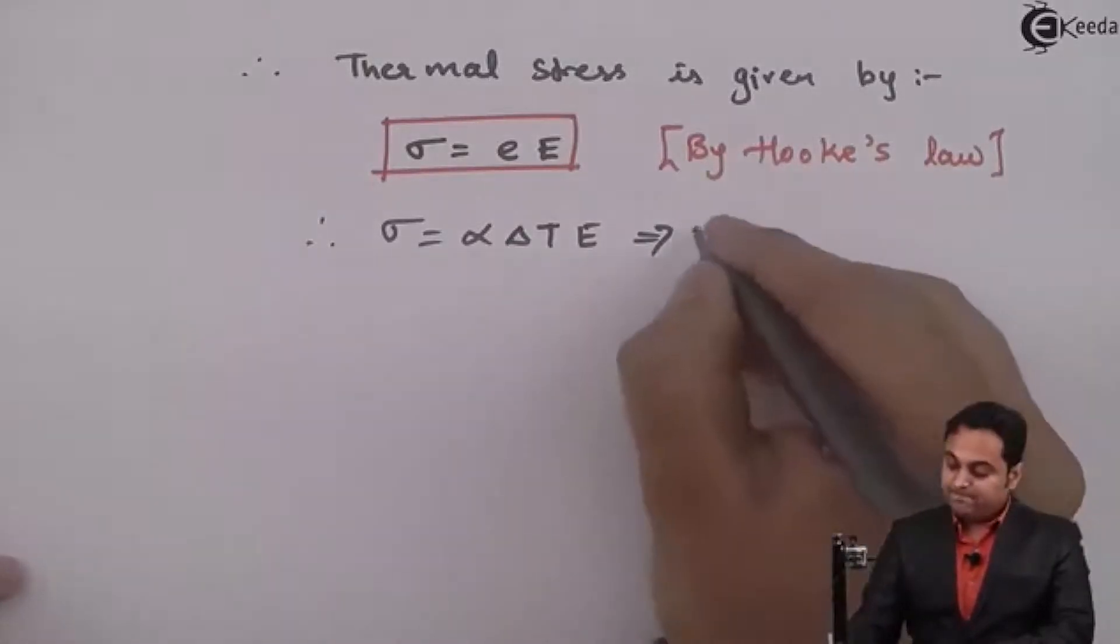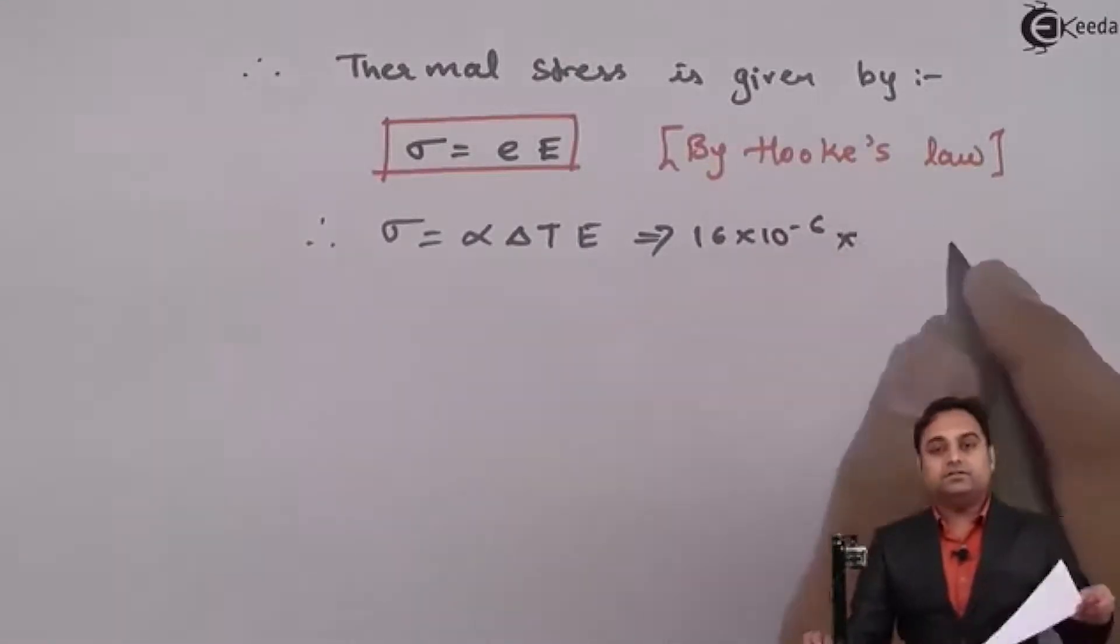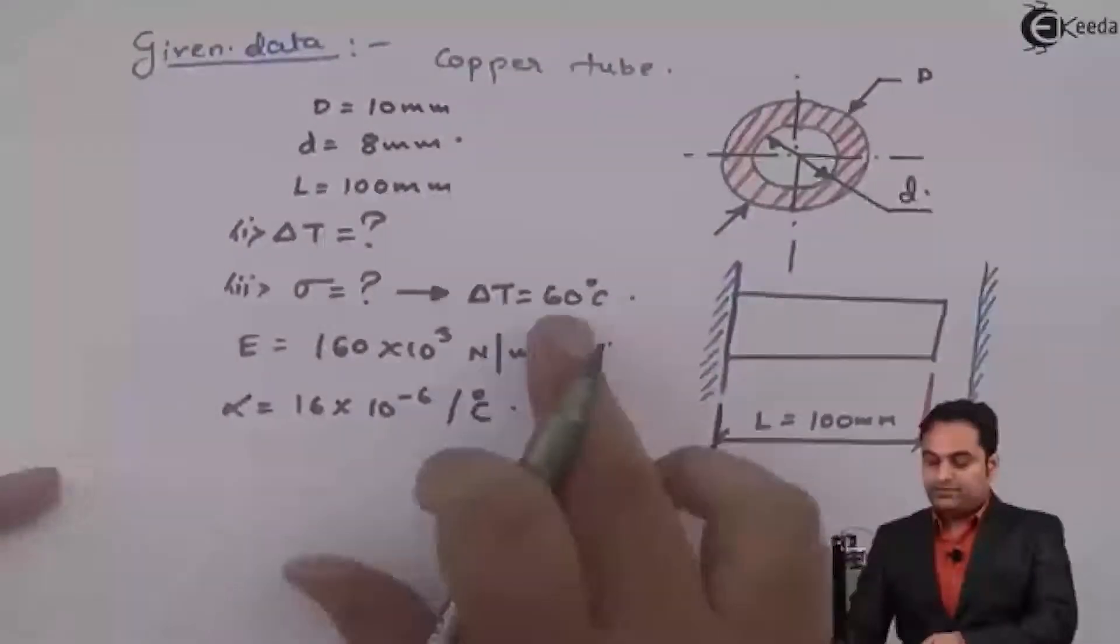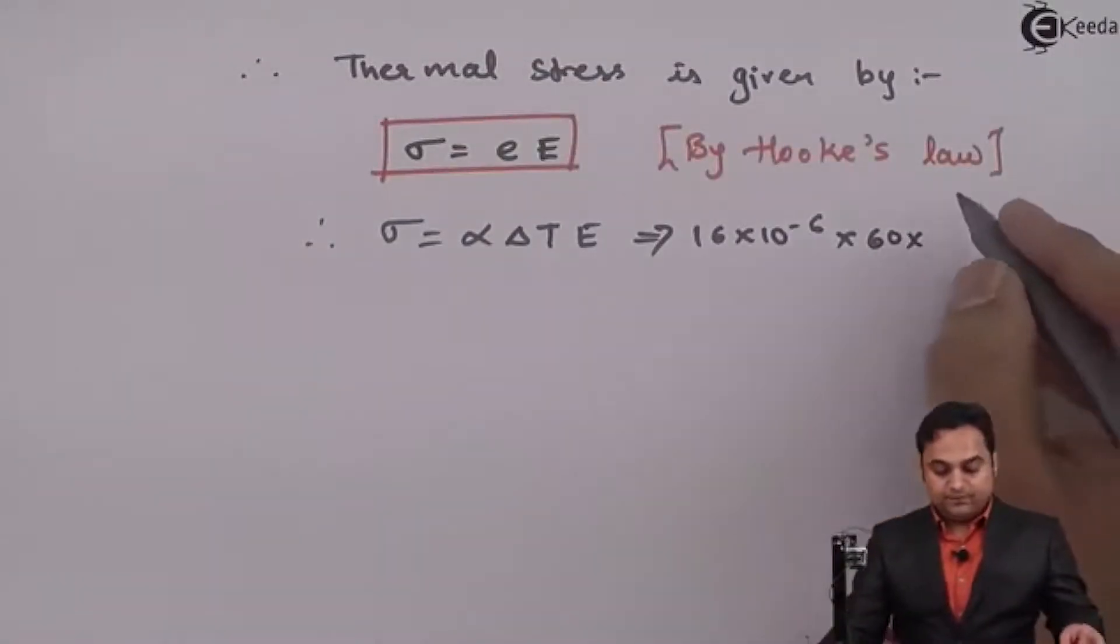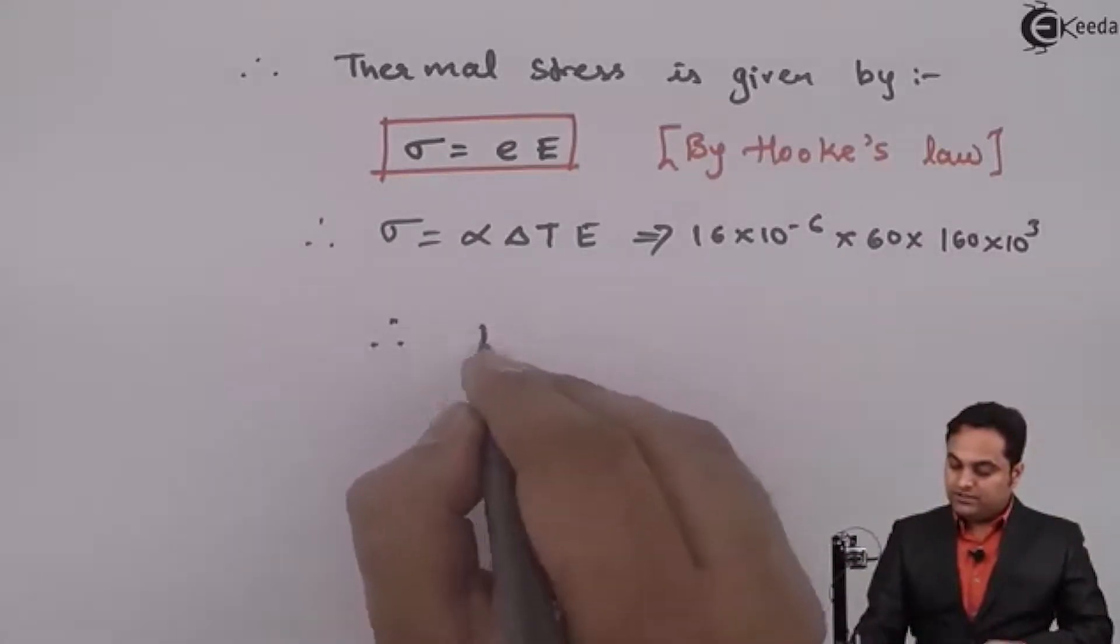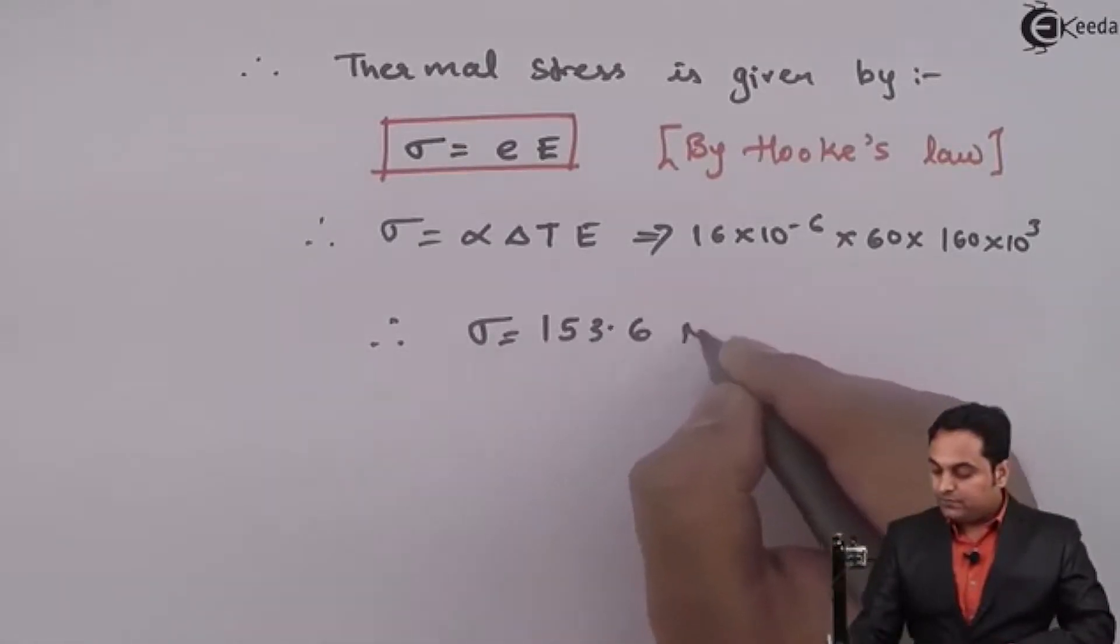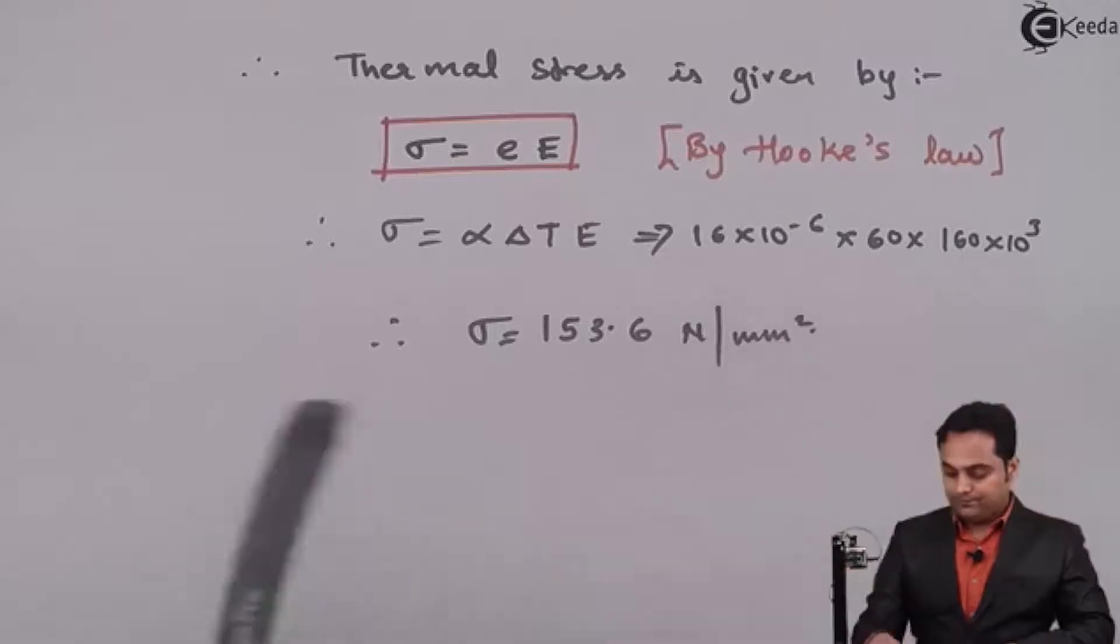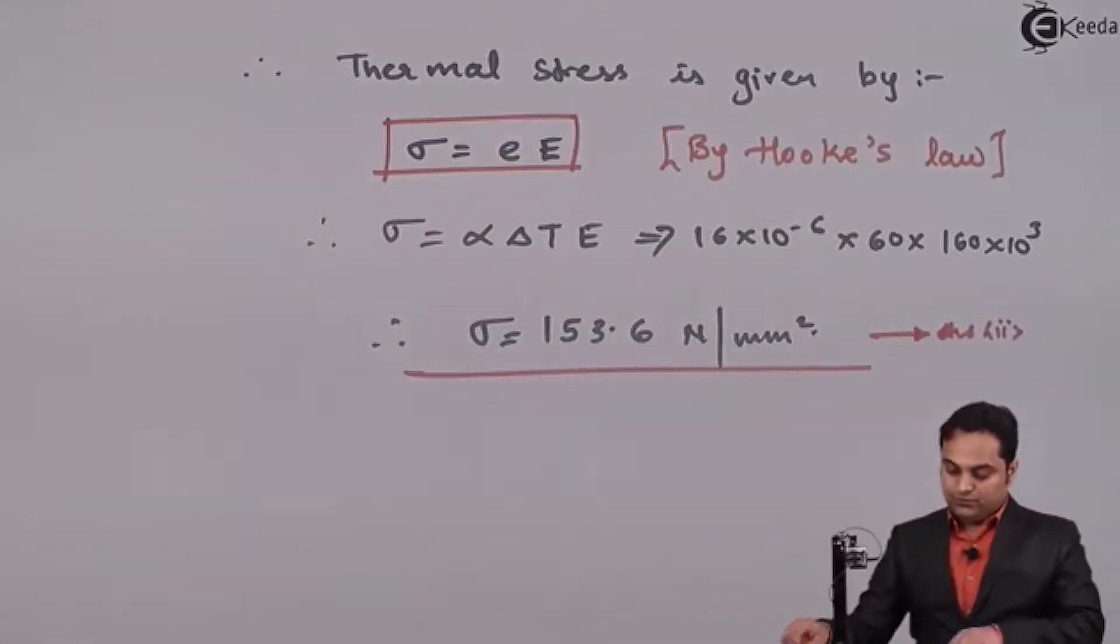So therefore stress equals strain, which is alpha into delta T into Young's modulus. Here I'll go on putting the values: alpha is 16 × 10⁻⁶, delta T they are telling us to take the value as 60, Young's modulus is 160 × 10³. So from this I'll get my answer of stress which is 153.6 newton per mm square.